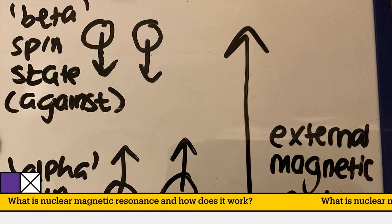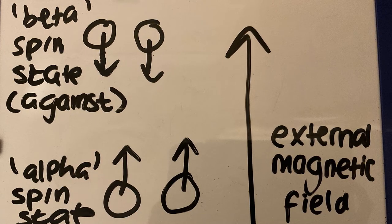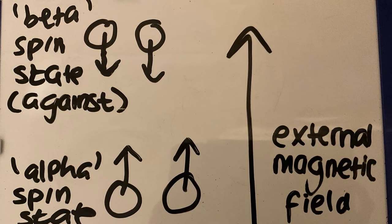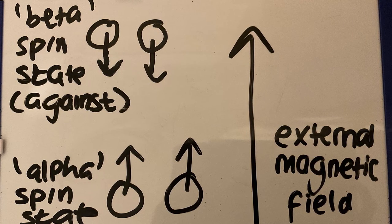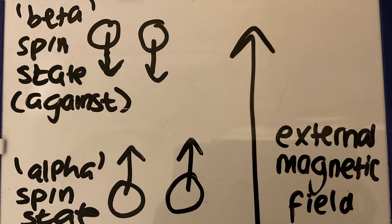the alpha spin state, but when the nuclei is against the magnetic field, it is known as the beta spin state. The alpha spin state is more stable as it requires less energy to align than to go against the external magnetic field.